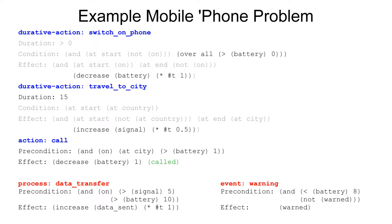I'm going to allow myself one slide of PDDL — it's not the nicest thing to read, but it's quite useful to see. This is an example problem where we are trying to make a phone call with a mobile phone without good reception. To complete what we need to do: we need to switch on the phone, we need to travel to the city, and then we can make our call. The key things are the unfaded elements: if we want to switch on the phone, we need some battery, and we start decreasing the battery level at a linear rate — battery decreases at 1 per unit T, and the signal increases at 0.5 per unit T. Our call action: if we are at the city and have a little bit of battery, we instantaneously decrease the battery level to make that call.